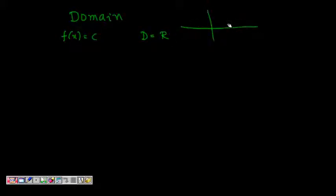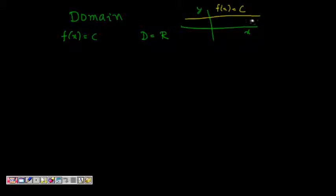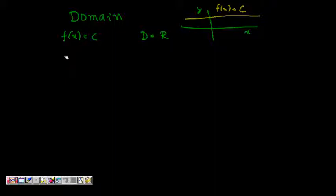If we have a function — this is the x-axis, this is the y-axis — and we have f(x) = c, it is constant everywhere, so its domain is the whole of the real number line.